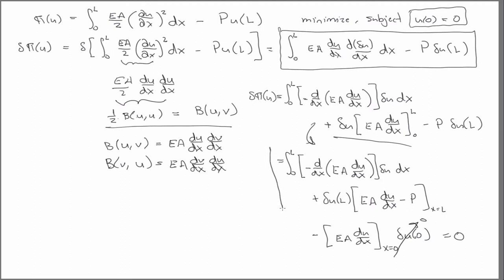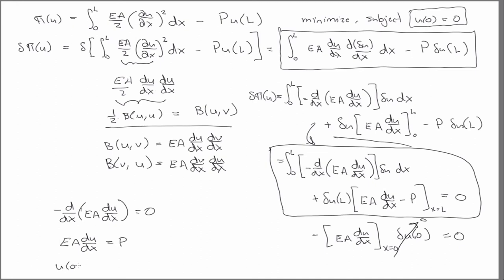What we're left with is this. For arbitrary del U, we have that. Does that look familiar? We derived that last time as the differential equation for this system.